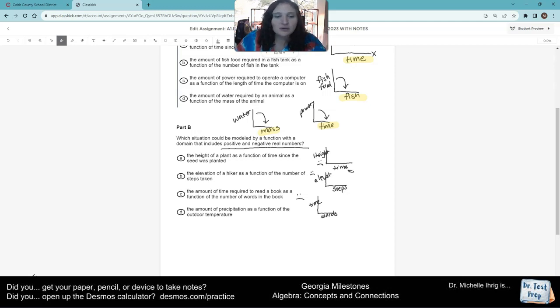So let's see this last one. The amount of rain, precipitation, as temperature. Bingo, winner, chicken dinner.